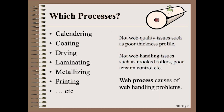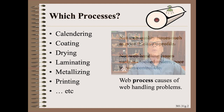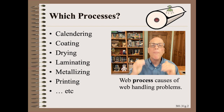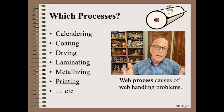To be clear, we are not referring here to web quality issues such as poor thickness profile control, though you may have those troubles also. To be clear, we are not referring here to web handling issues such as crooked rollers, poor tension controls, etc., though you may have those problems as well. What we are talking about here is the web process causes of web handling problems. I call this category product process design issues.